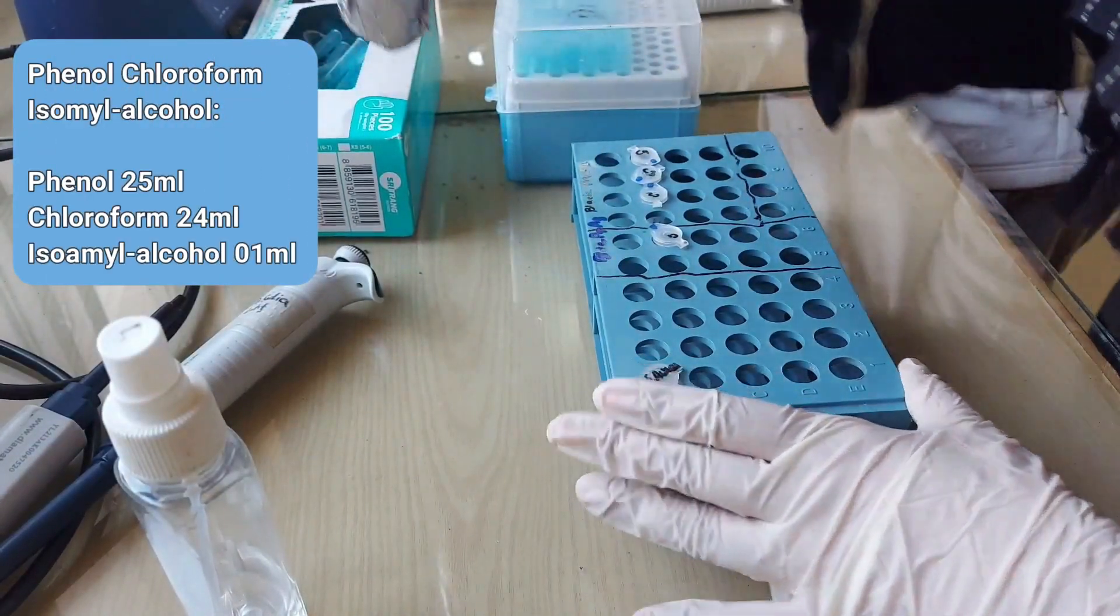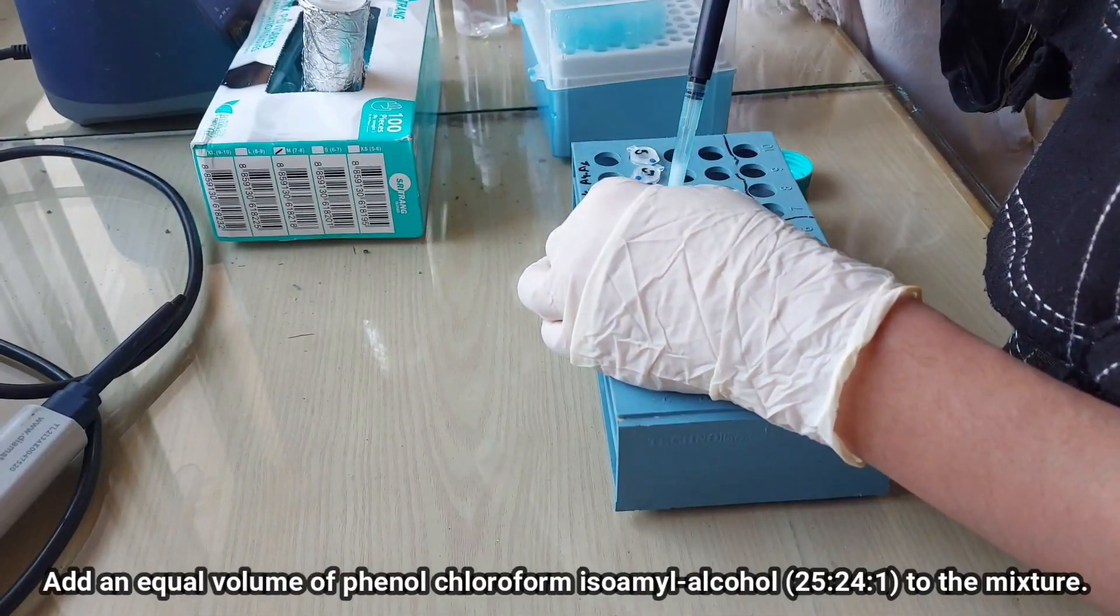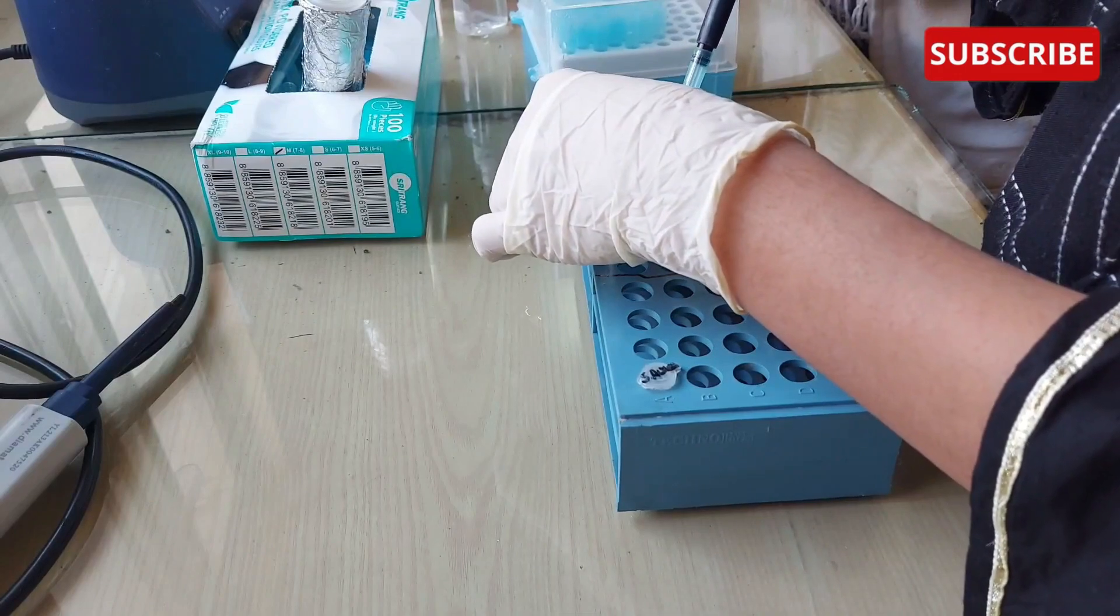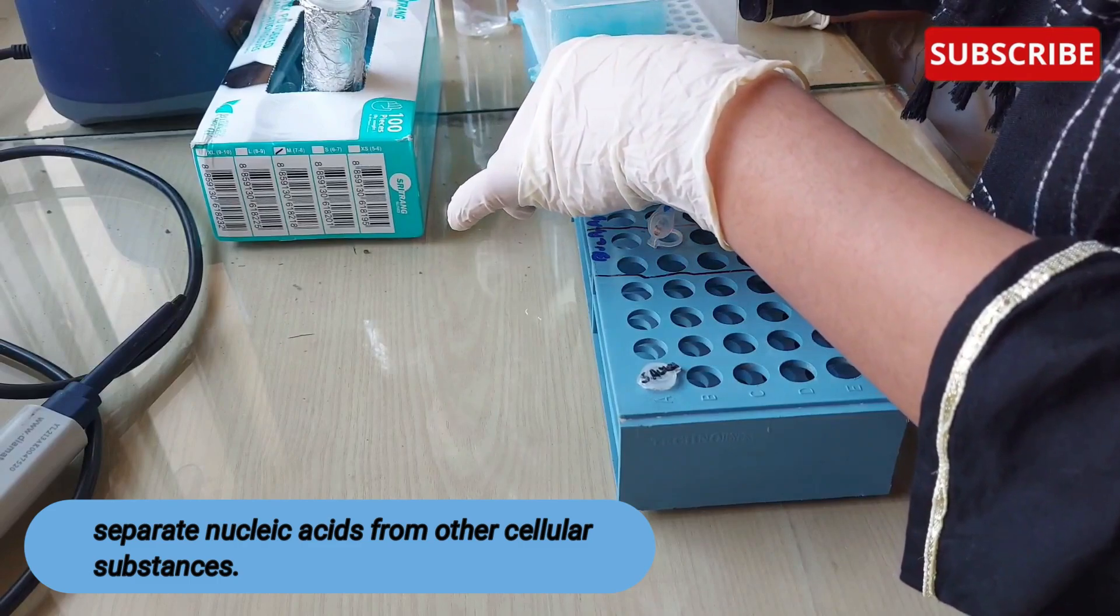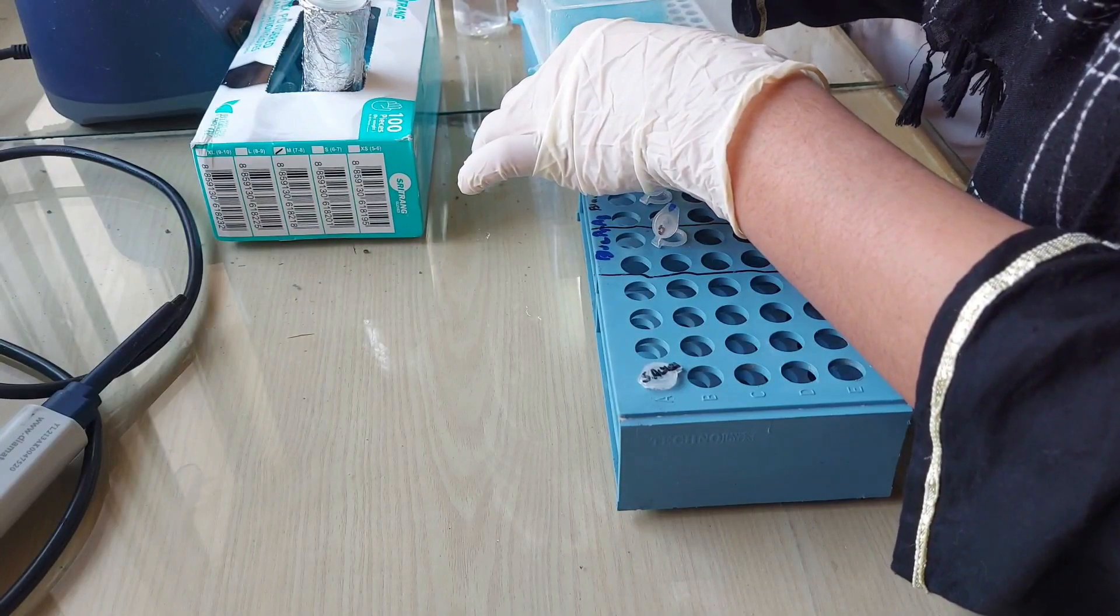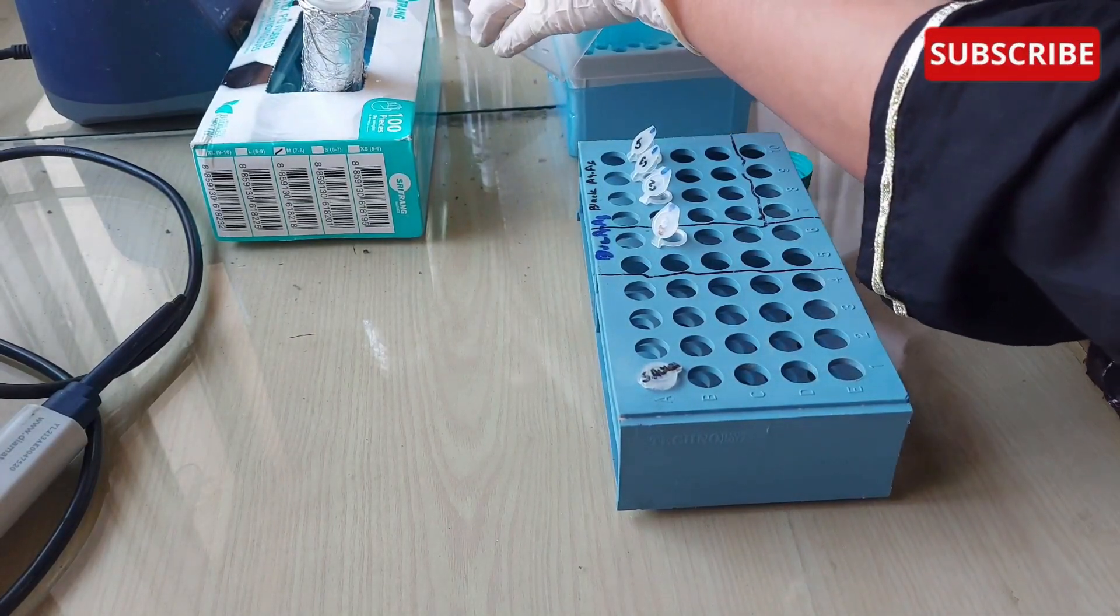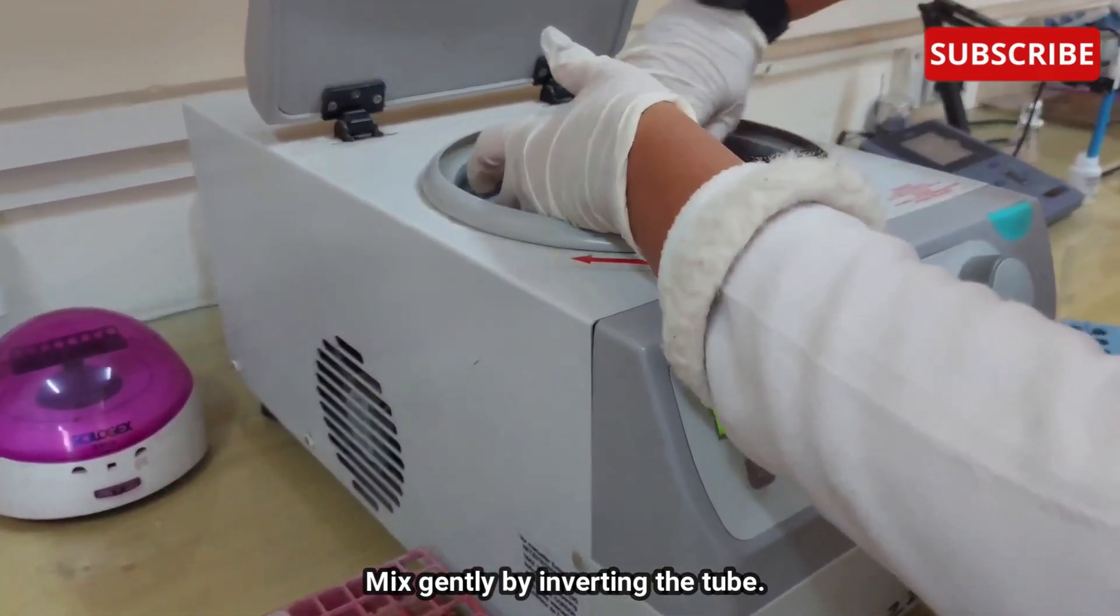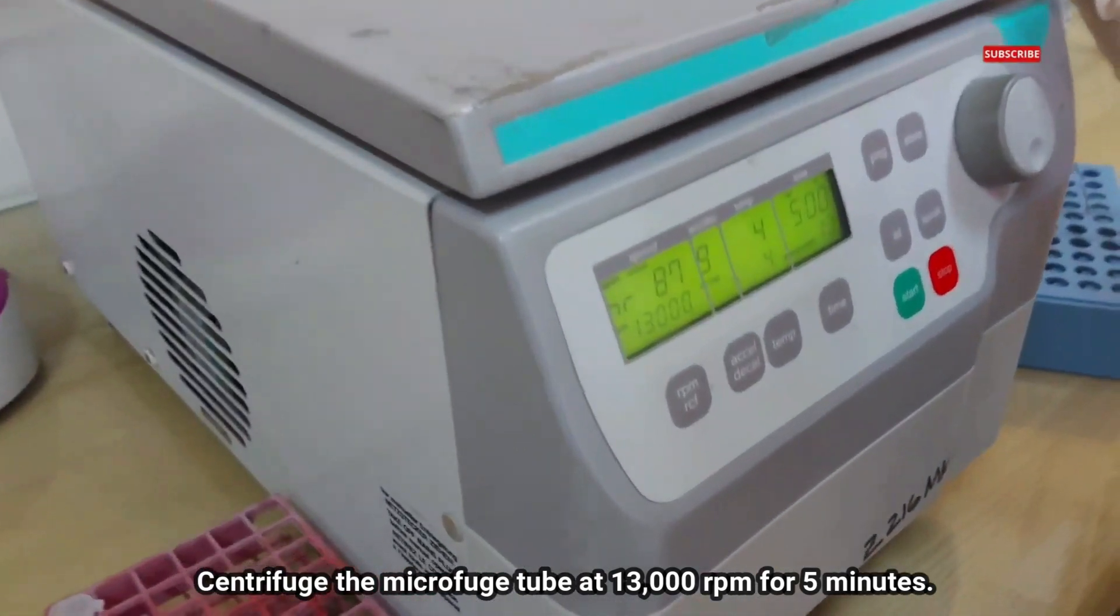Now the next step is phenol chloroform extraction. For that, you will need phenol chloroform isoamyl alcohol with a ratio of 25:24:1. Add an equal volume of phenol chloroform isoamyl alcohol to the mixture. This step separates nucleic acid from other cellular substances. A mixture of phenol chloroform and isoamyl alcohol is added to the tissue sample to promote the partition of lipids and debris into an organic phase, leaving the DNA in the aqueous phase. Mix gently with the help of pipetting or vortex machine. Then centrifuge the tube at 13,000 RPM for 5 minutes.